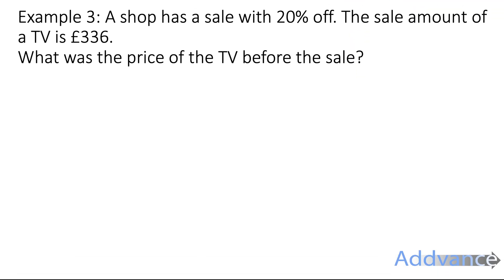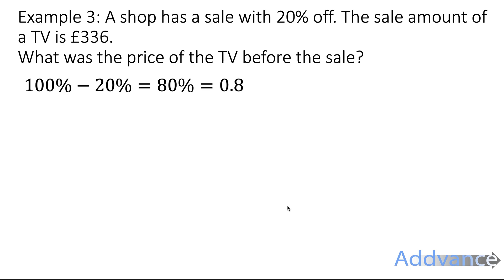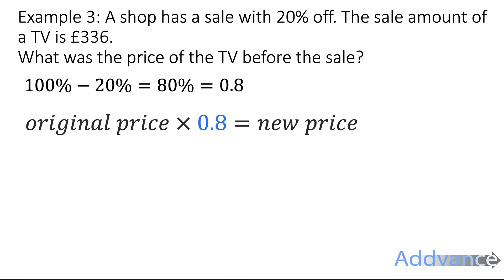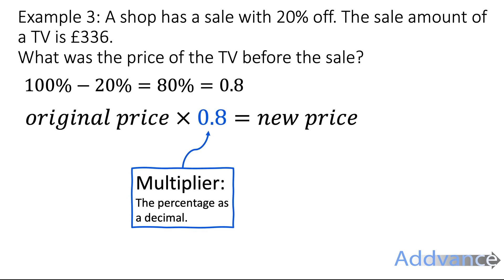Example three. A shop has a sale of 20% off. The sale price of a TV is £336. What was the price of the TV before the sale? The TV has already decreased in price and now after the discount it is £336. What we know is that the price has gone down by 20%, so now it is 80% of the original price.